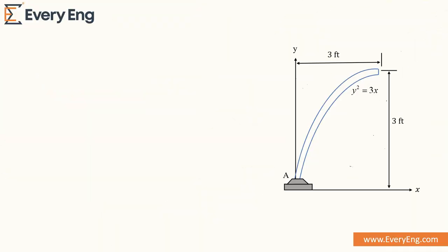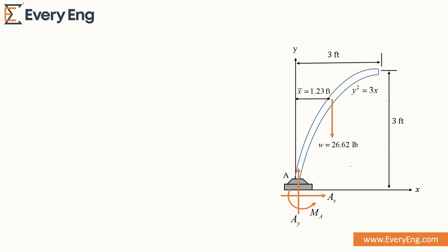Now we calculate the reactions at fixed support A. We draw the free body diagram of this uniform rod. There is a weight acting in the downward direction from the center of the uniform rod, with the center located 1.23 feet from the y-axis. We draw the reactions at support A: a vertical reaction AY, a horizontal reaction AX, and a moment MA at the fixed support. Using the equilibrium equation, the summation of all forces in the x-direction equals zero, so the horizontal force AX is equal to zero.